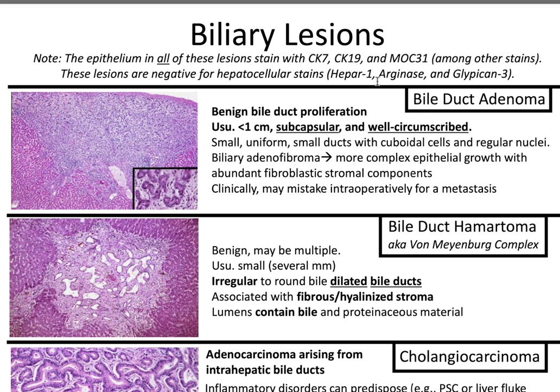Bile duct adenoma. This is a benign bile duct proliferation, usually less than one centimeter, subcapsular, and well-circumscribed. You'll have small, uniform ducts with cuboidal cells and regular nuclei. For biliary adenofibroma, it has more complex epithelial growth with abundant fibroblastic stromal components. Clinically, you may mistake it intraoperatively — when they send a frozen — for a metastasis.